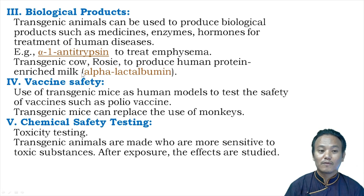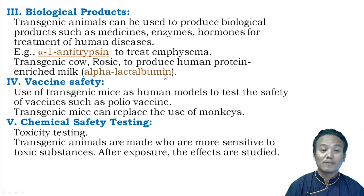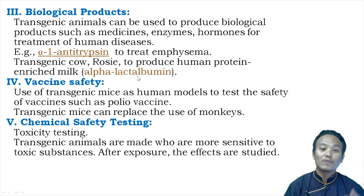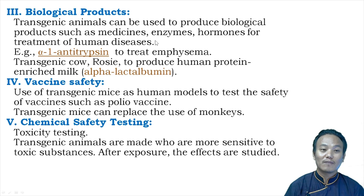In 1997, the first transgenic cow was created — her name was Rosie — and she produced human protein-enriched milk. Rosie's milk contained the human protein alpha-lactalbumin. Such milk produced by transgenic cows is said to be nutritionally more balanced compared to natural cow milk.